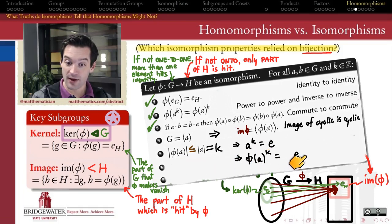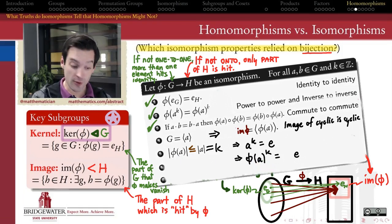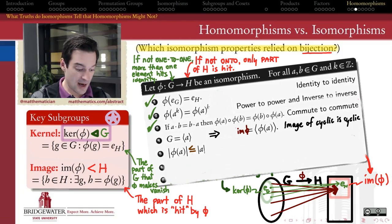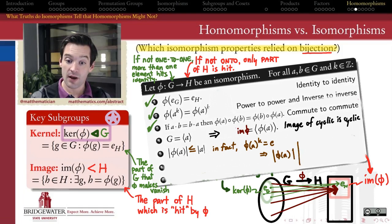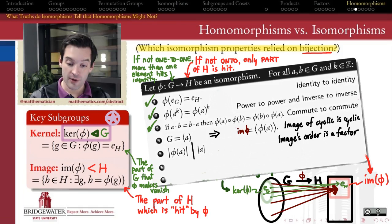Does this show that phi of A has order k? Well, not exactly. It might be the case that a smaller power of phi of A becomes the identity before we get to the kth power. So the best we can say is that the order of phi of A is less than or equal to the order of A. Without one-to-oneness, we can't conclude equality. And furthermore, it cannot be just any random number less than or equal to the order of A — it has to be a divisor of the order of A. So we rephrase this: the order of the image of an element under a homomorphism is a factor of the order of the original element.